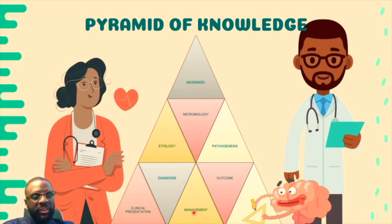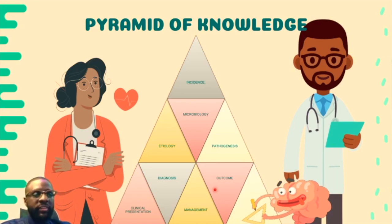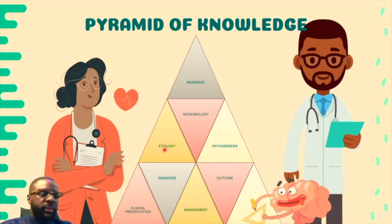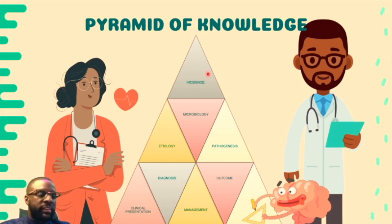After managing the patient, you must consider outcome: what happens if you did nothing (natural history), if you partially treated them, or even if you treated them well — complications can still arise. For infectious disease, etiology is extremely important. You also need to know the microbiological organisms and how they cause disease — that is pathogenesis. Incidence sits at the peak of the pyramid: nice to know, but not essential for managing your patient.